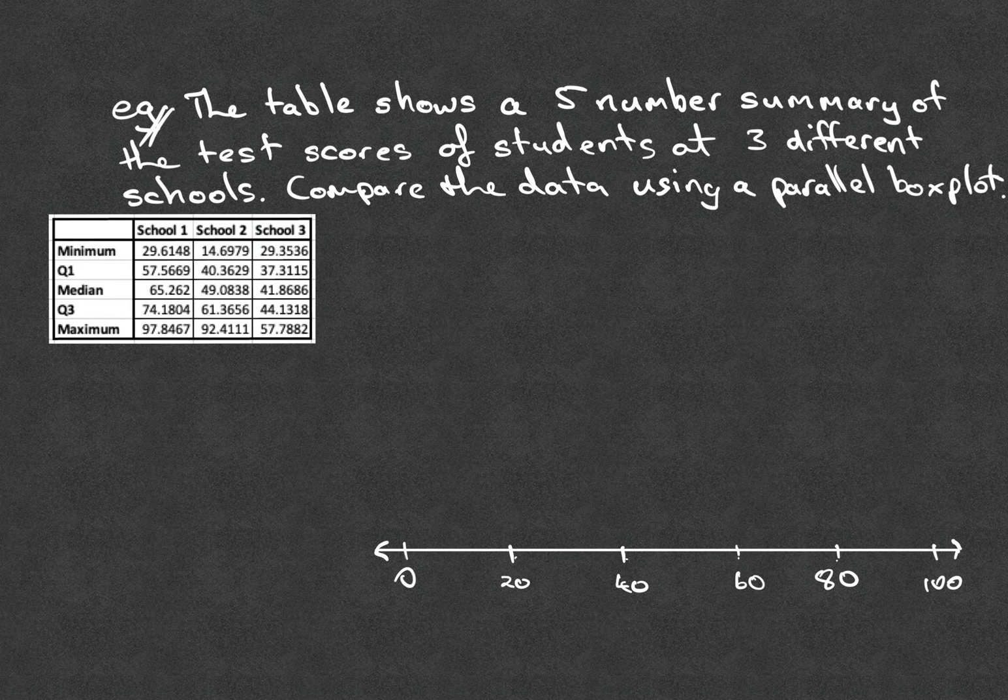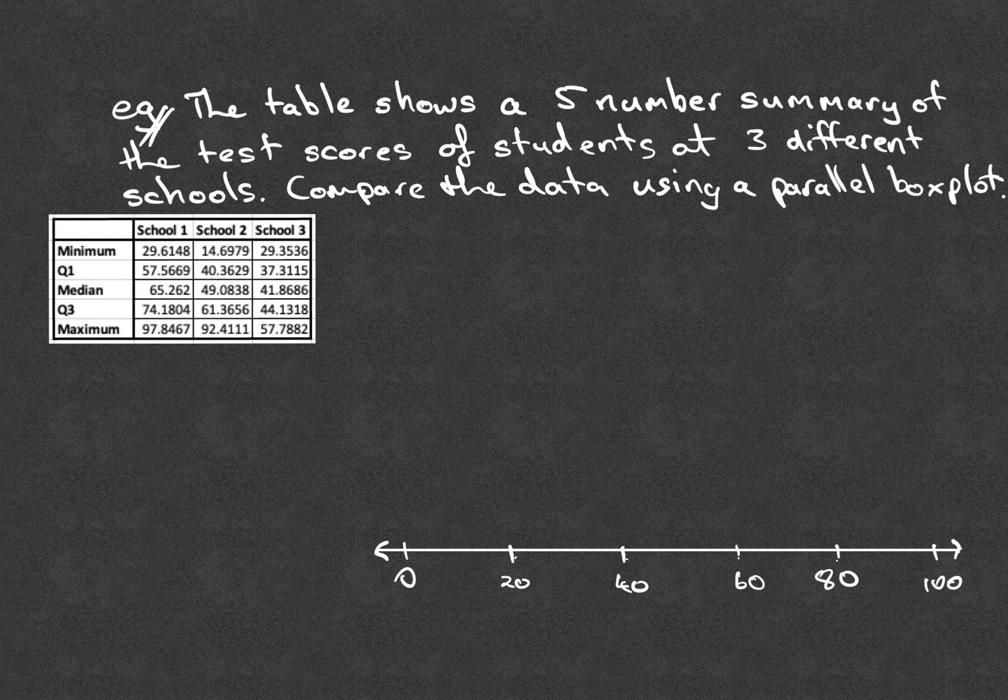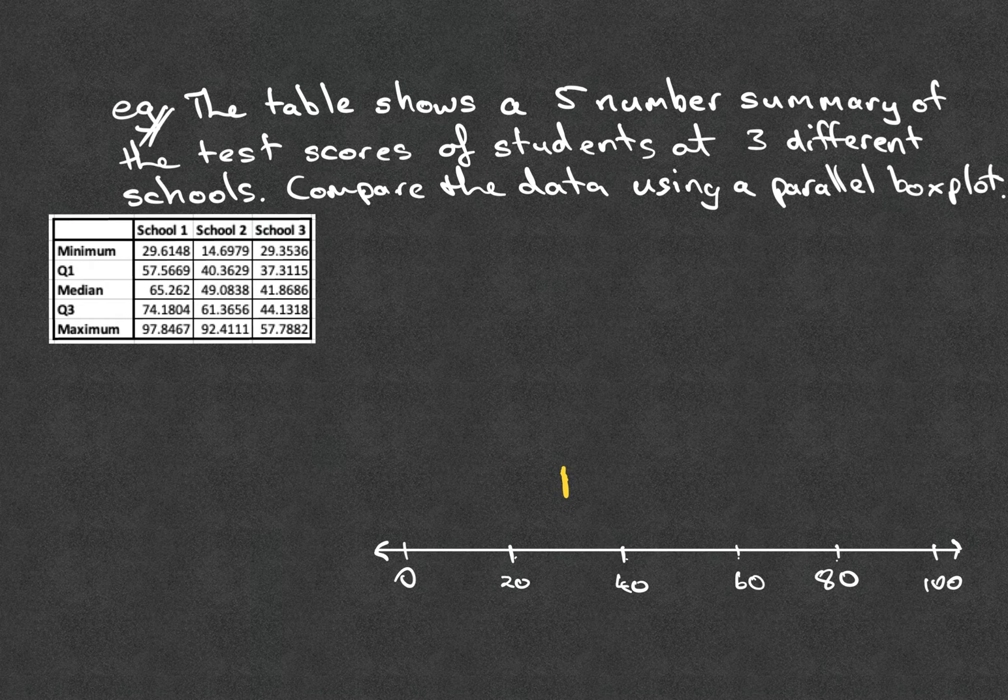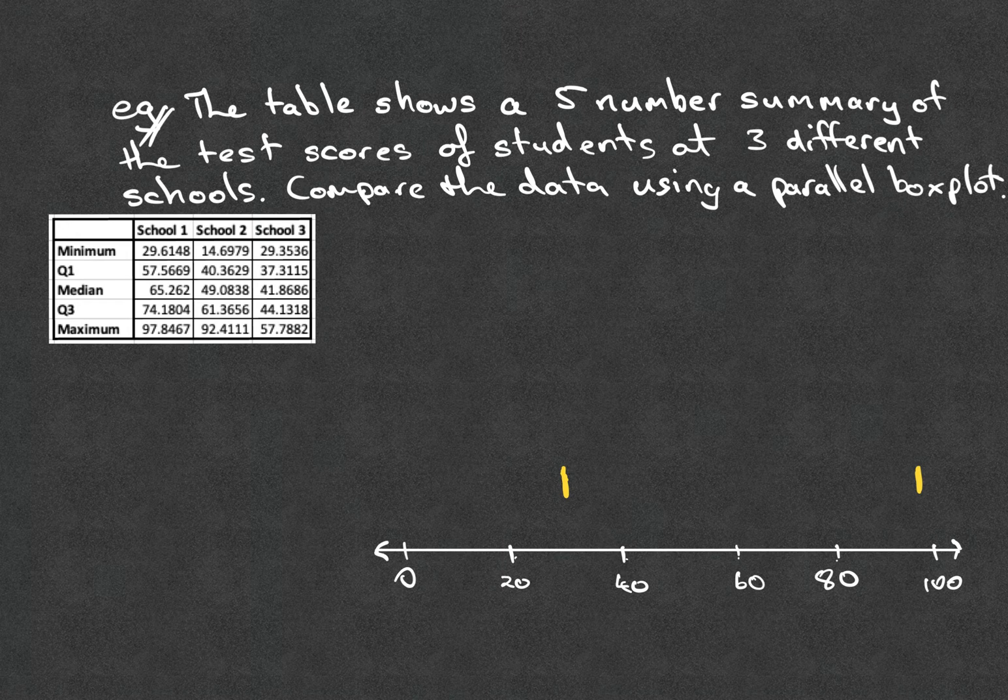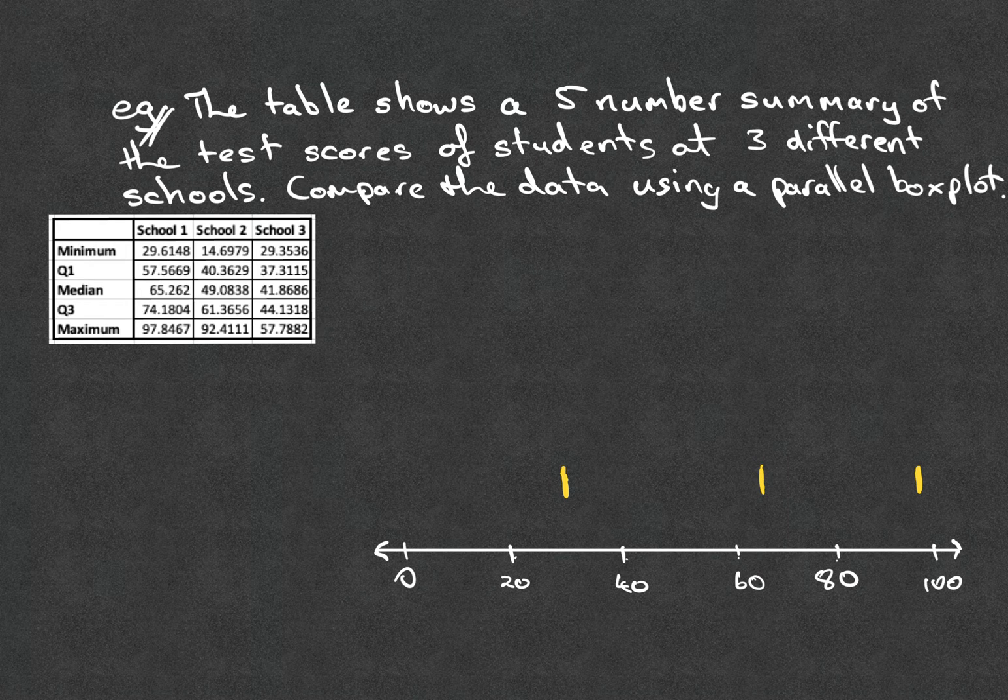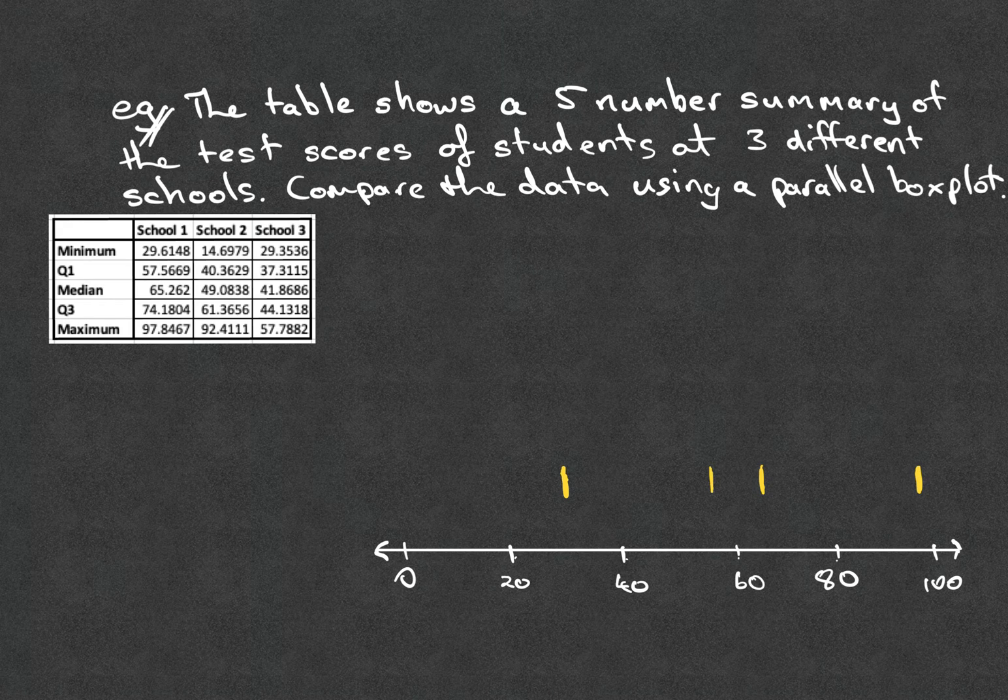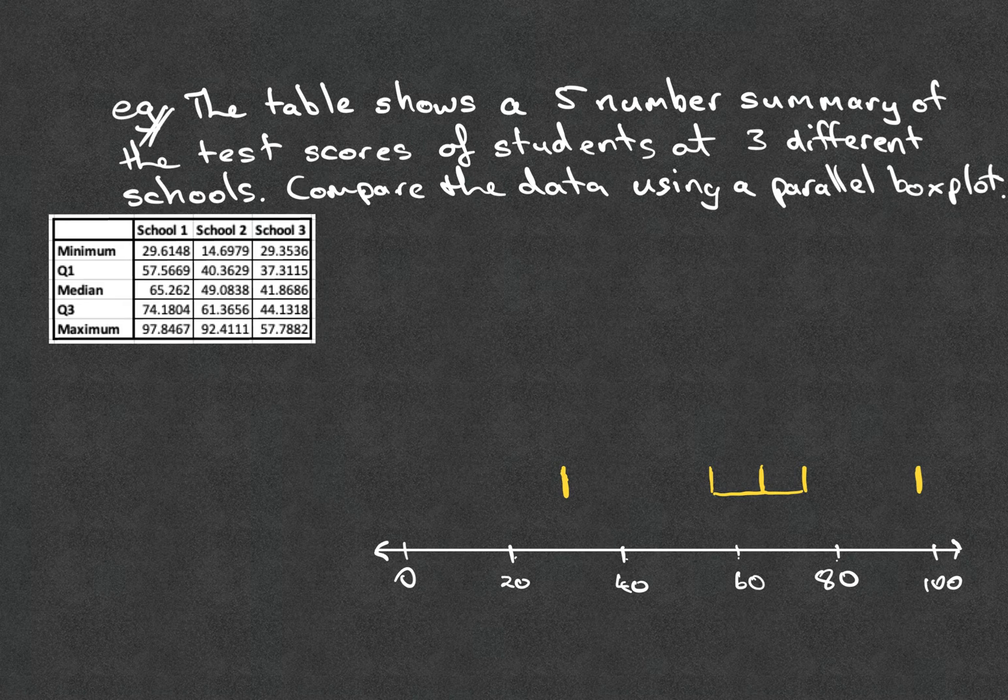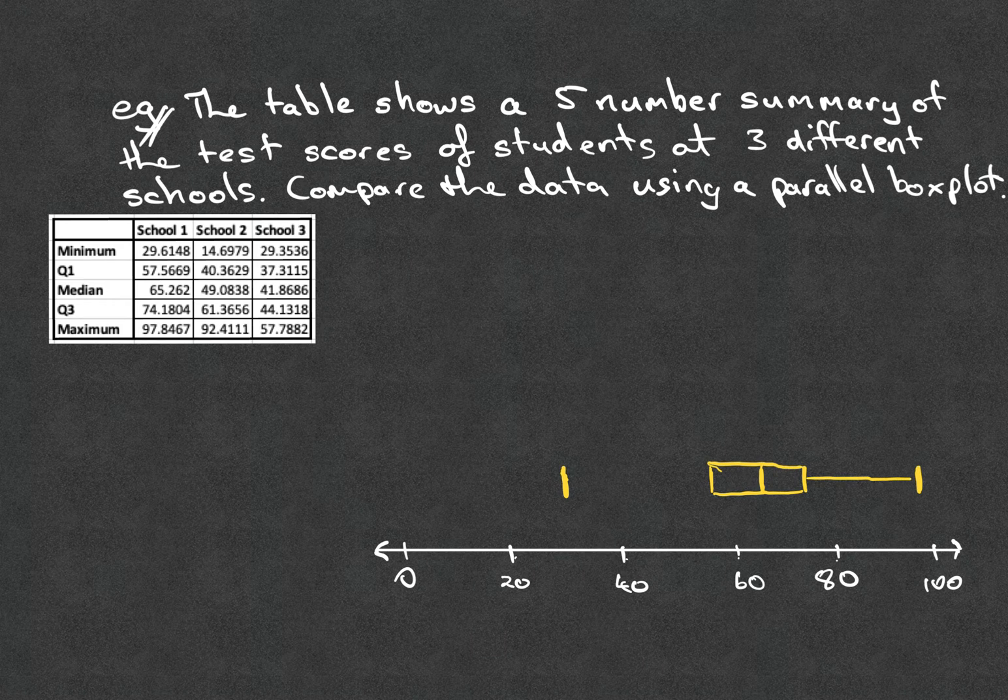So our first school has a minimum value of 29.6 and a maximum of 97.8. So I can go ahead and slot those in. 29 will be around about there, 98 way up the end here. Then we've got a median of 65.2, so 65 around about here. Q1 of 57.6, so 57 roughly here. And a Q3 of 74.1, so 74.1 around about here. So we'll just form our little box in the middle there from Q1 to Q3 and extend out to the maximum and minimum values.